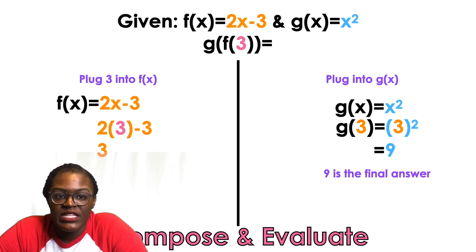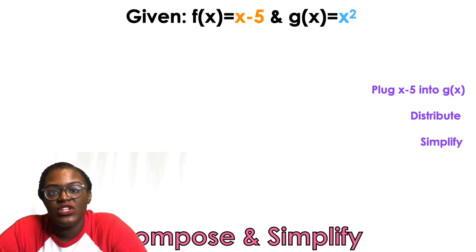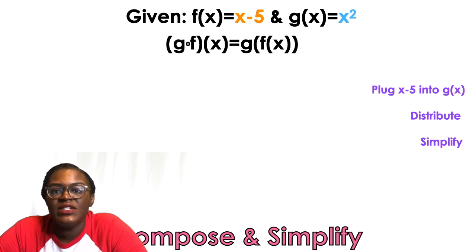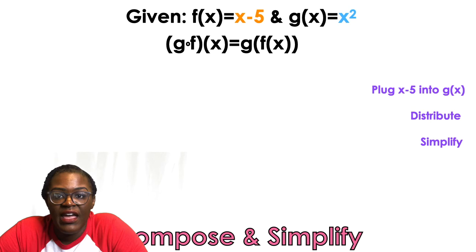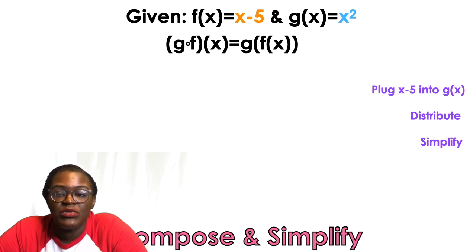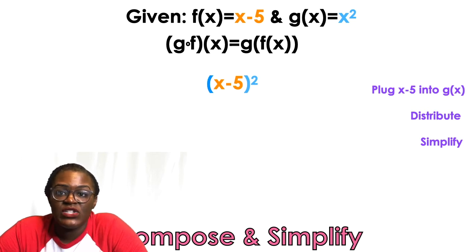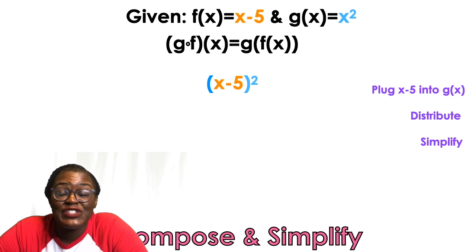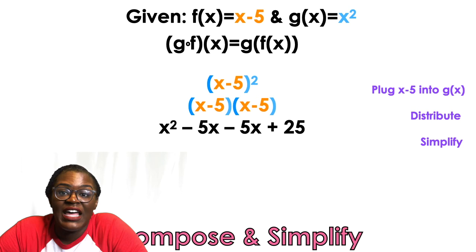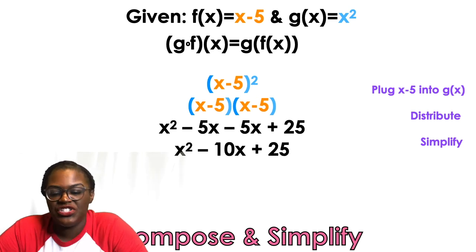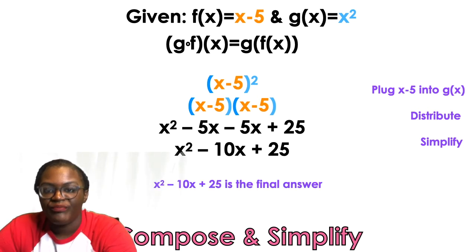Before, we were evaluating — putting numbers into composed functions. Now we're putting functions inside functions symbolically. The notation G open-circle F of x means put F inside of G. So everywhere there's an x in G, replace it with F(x), which is x minus 5. That gives us (x minus 5) squared — remember, that's not x squared minus 25; you have to distribute and combine like terms.